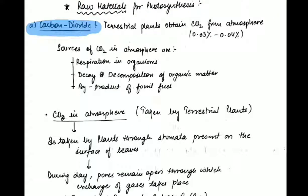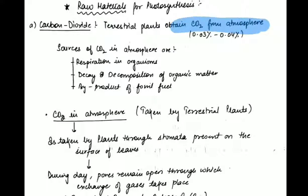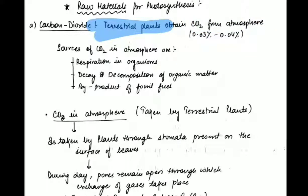Starting off with carbon dioxide — terrestrial plants, meaning land plants, obtain carbon dioxide from the atmosphere. We know that air consists of three main gases: nitrogen, which is present in abundance at 78%, second is oxygen at 21%, and the rest are other gases, amongst which the major gas is carbon dioxide. So plants living on the land obtain carbon dioxide from the atmosphere.